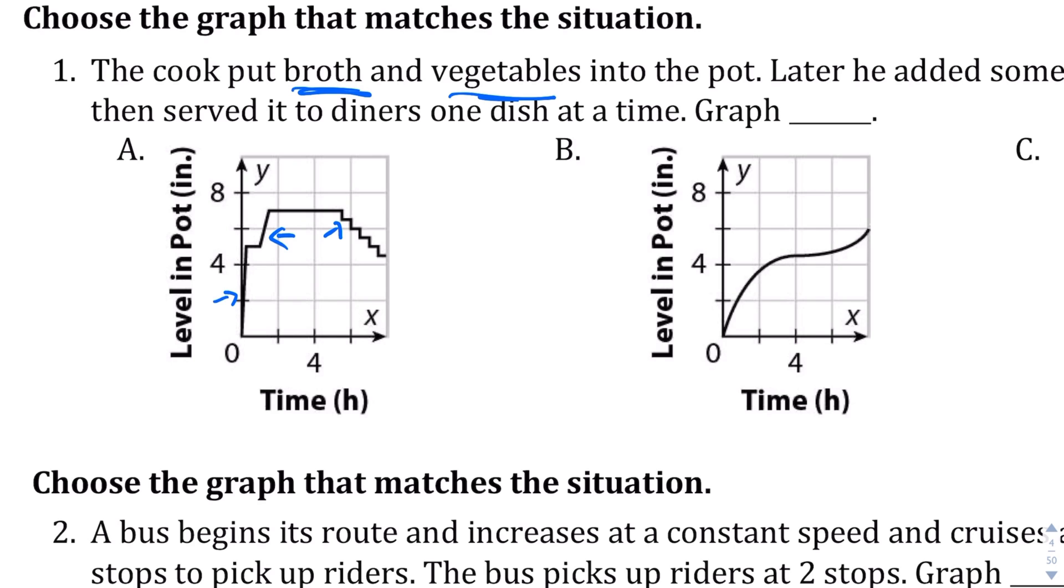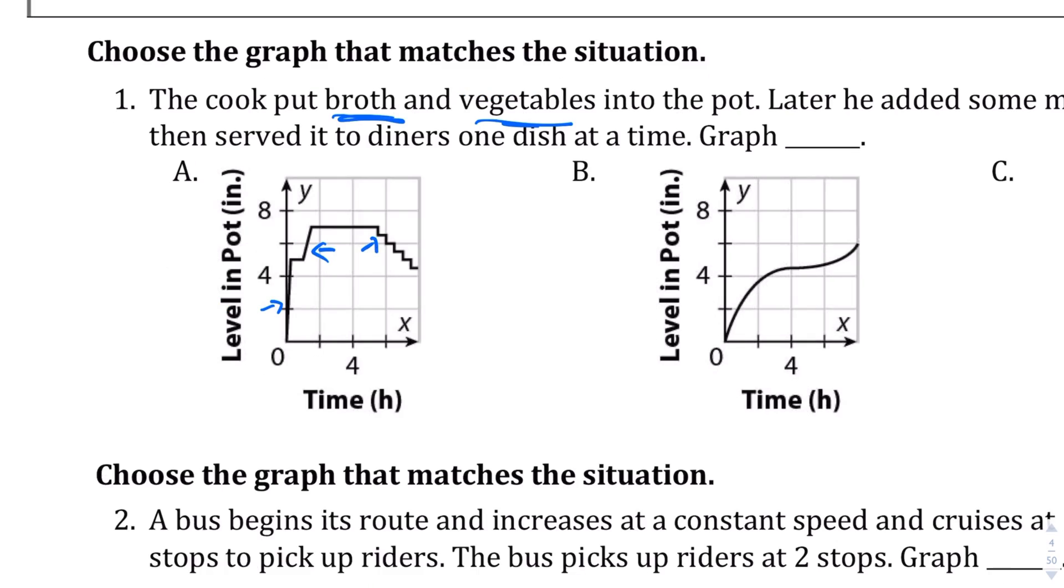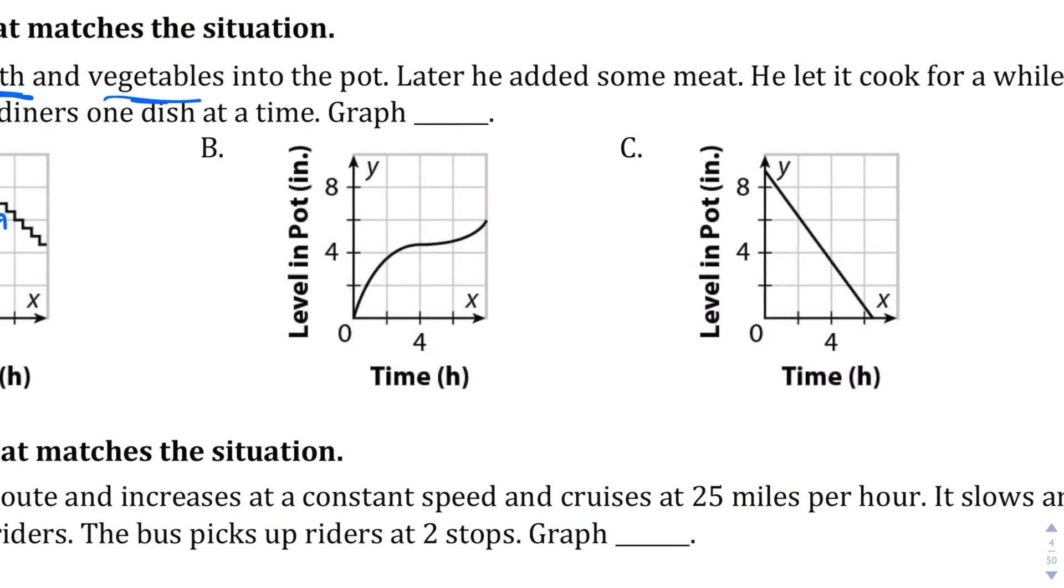So I think it's going to be graph A. But let's take a look at graph B and C just to compare. Now if we take a look at graphs B and C, I don't see that kind of accuracy and description. There's supposed to be a part where the cook puts broth and vegetables into the pot.